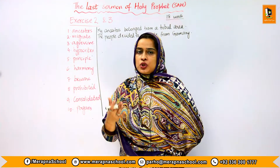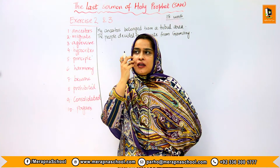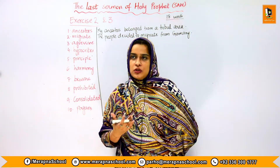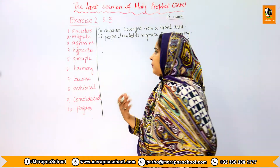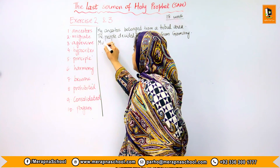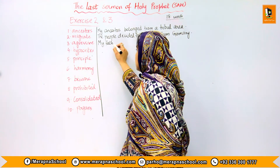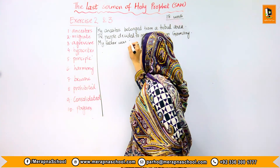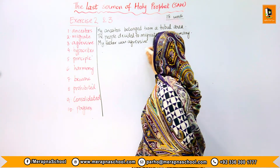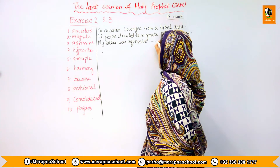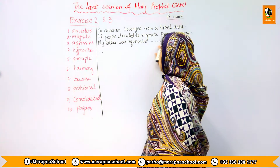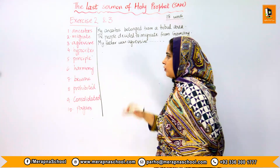Next is 'aggressive.' It's an emotion — a feeling of a person when you want to confront someone or when you are in an angry position. The sentence is: 'My father was aggressive when he heard about the news of my failure.' You can always give the reason why he was aggressive.